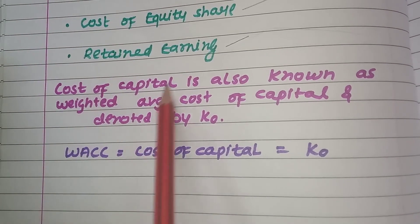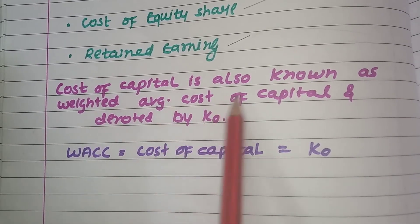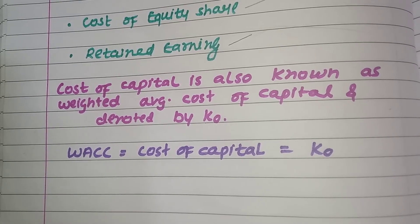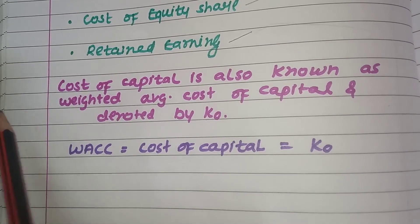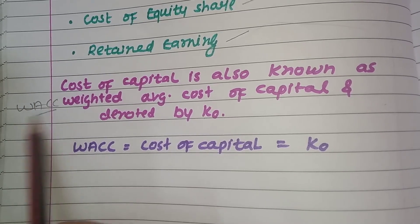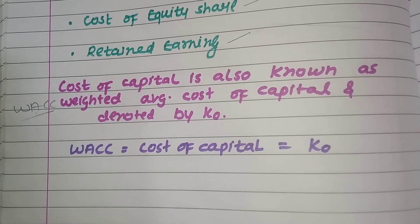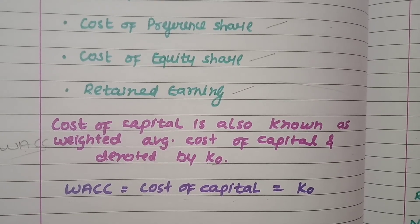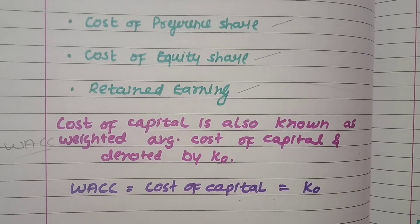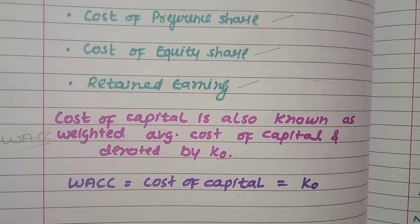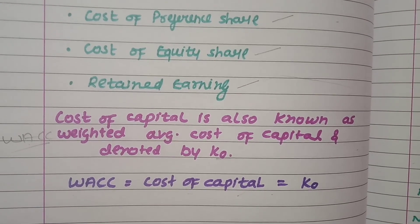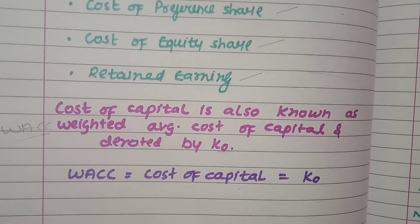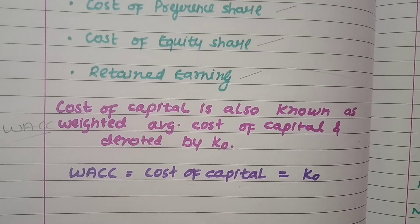Now, cost of capital is also known as weighted average cost of capital. In short you can write it WACC — weighted average cost of capital. It is denoted by Ko. So: cost of capital = Ko = WACC = weighted average cost of capital.